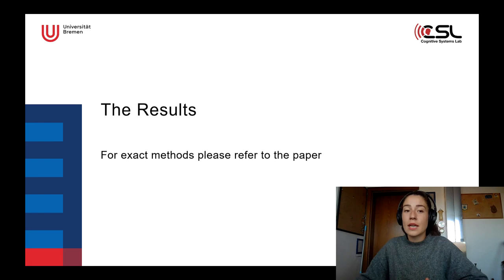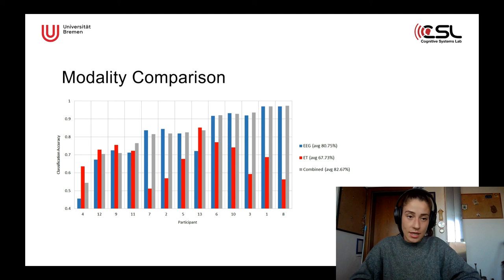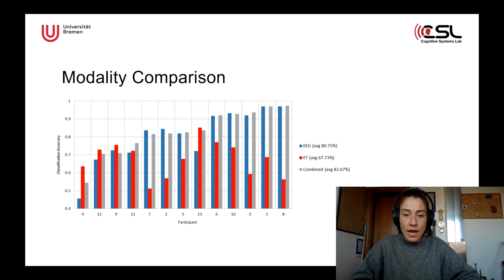I'm going to present the results for time reasons; if you're interested in the exact methods, please refer to the paper. First, we performed a modality comparison. We found that the EEG data could be classified with an average accuracy of a little above 80%. The eye-tracking data was classified with an average accuracy of only 67%. If we combined the two feature sets, we reached a better accuracy of a little above 82%. However, this improvement was not significant compared to the EEG data alone.